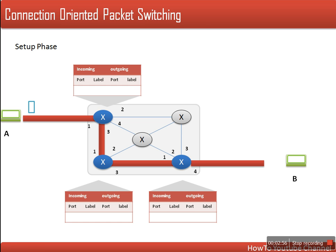So let's see how it works. Whenever a node wants to send any data to another node, first of all they actually send a request packet. Why are they sending a request packet? That request packet actually establishes the path through which all packets will be sent.